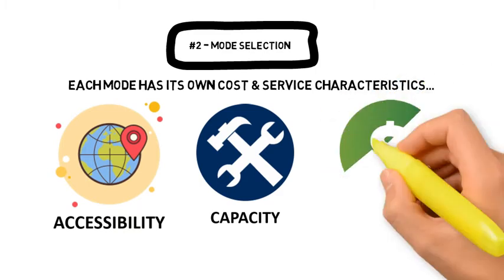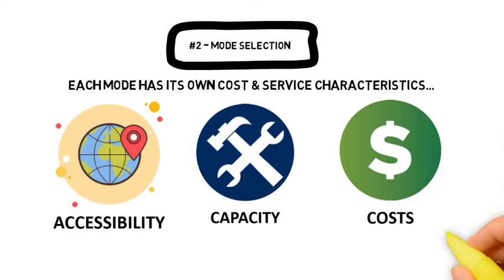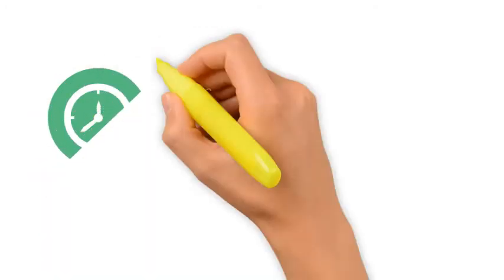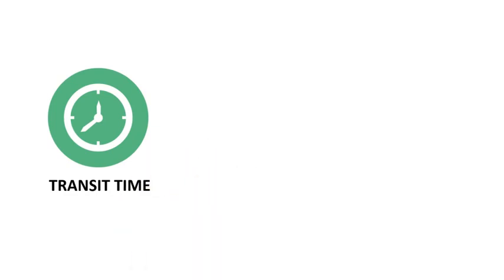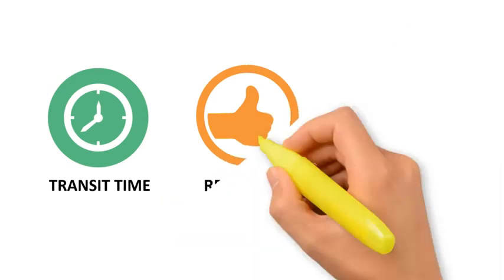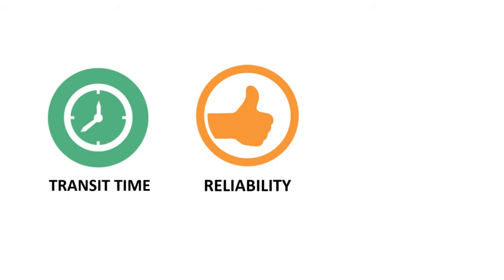If both accessibility and capacity are satisfied, then it often comes down to cost. The cost of transportation is usually considered relative to the product — for example, a low-value product is seldom transported by air. When comparing costs, one also has to look at transit time: the total time taken from origin to destination, including any intermodal transfers. In some cases, it may be necessary to select a more costly mode to fulfil customer service expectations. Different modes usually have different levels of reliability, which are country or region specific, since there are different operating environments for carriers everywhere.